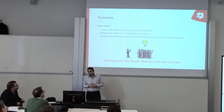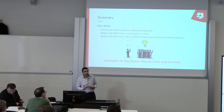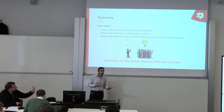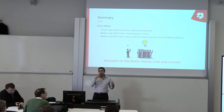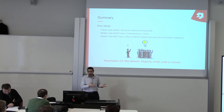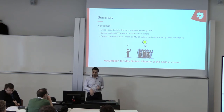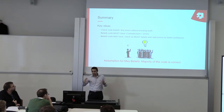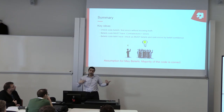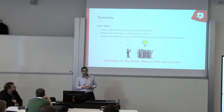To summarize: to find errors without knowing the truth, we need to check the code's beliefs. There are must-beliefs and may-beliefs. A contradiction in must-beliefs results in a 100% error, while a contradiction in may-beliefs requires us to rank them according to confidence. All of this is based on the assumption that the majority can make the right decision, and that the majority of code is correct.